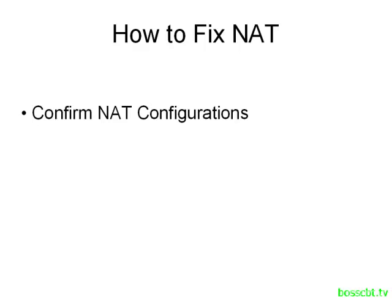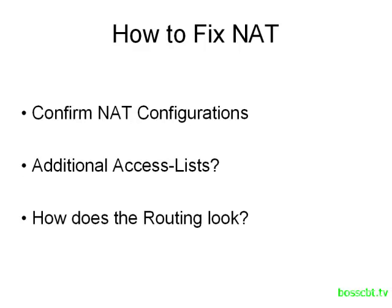The first thing you want to do is confirm your NAT configurations, and we'll run through a few steps on that. After that, we need to take another look at access lists — specifically access lists that are not directly related to NAT but could be affecting how NAT is operating on your router. And then finally, we have to take a look at the routing involved. Perhaps NAT is working fine and the real problem is with the routing.